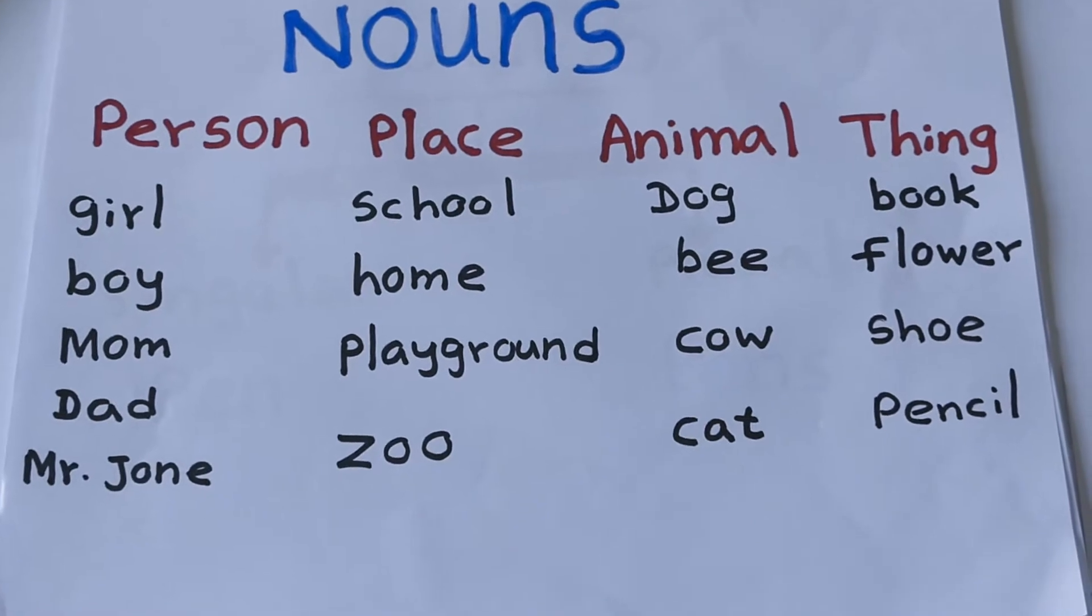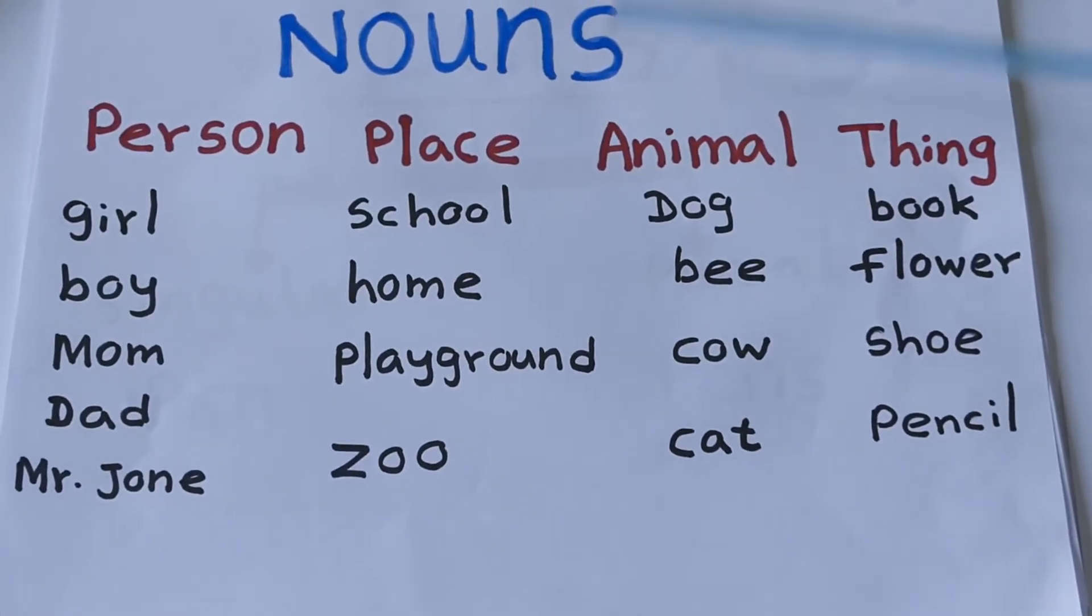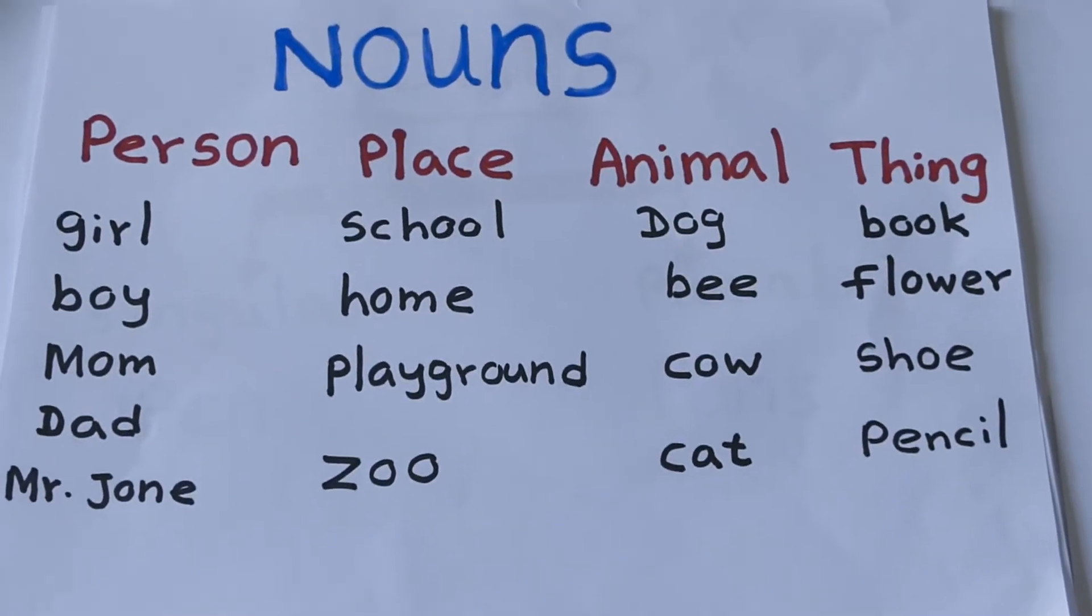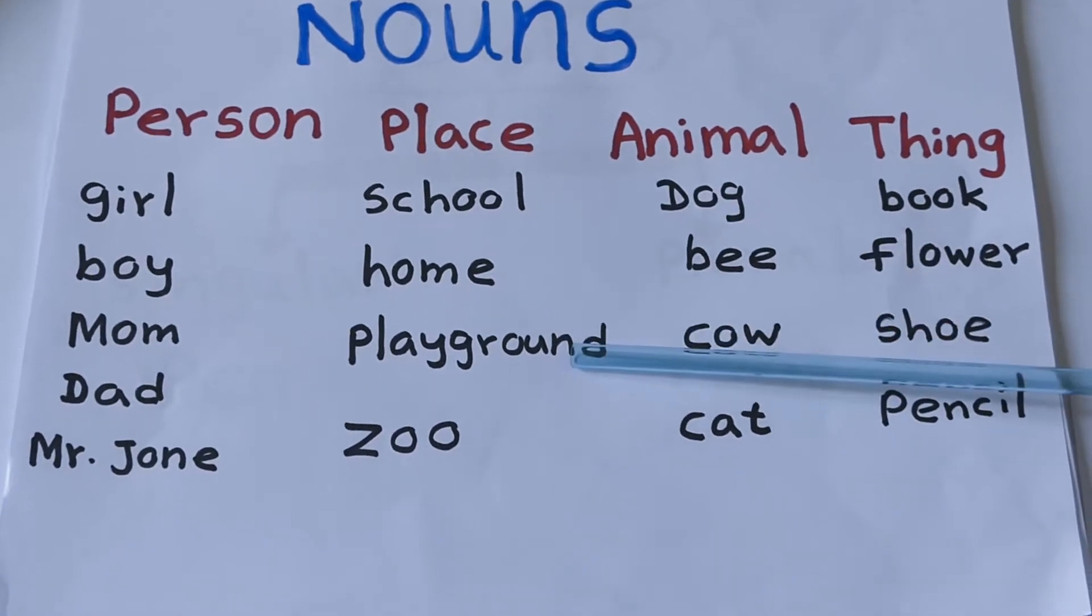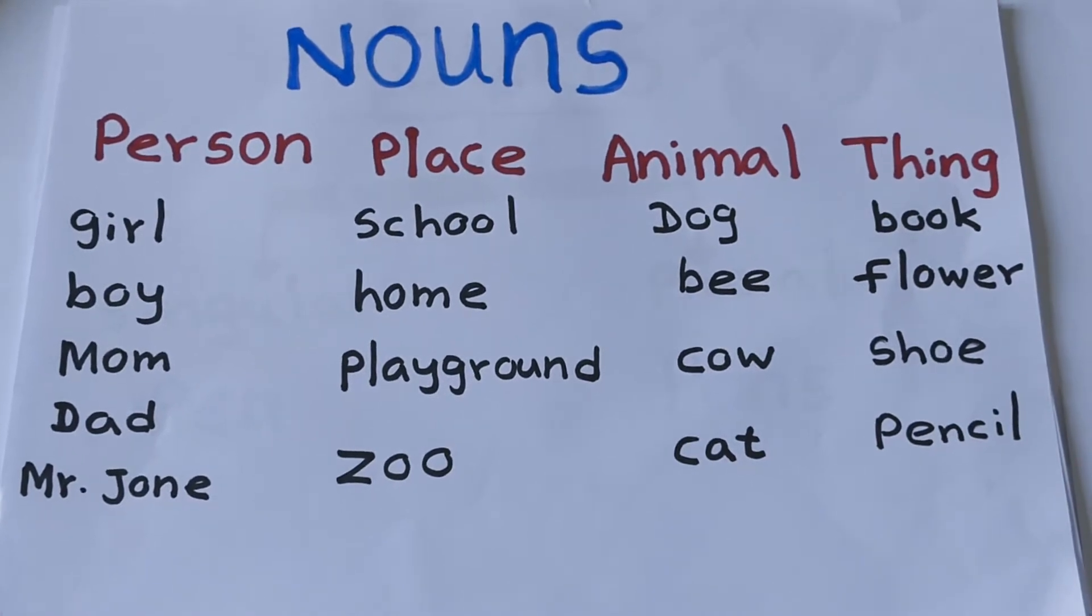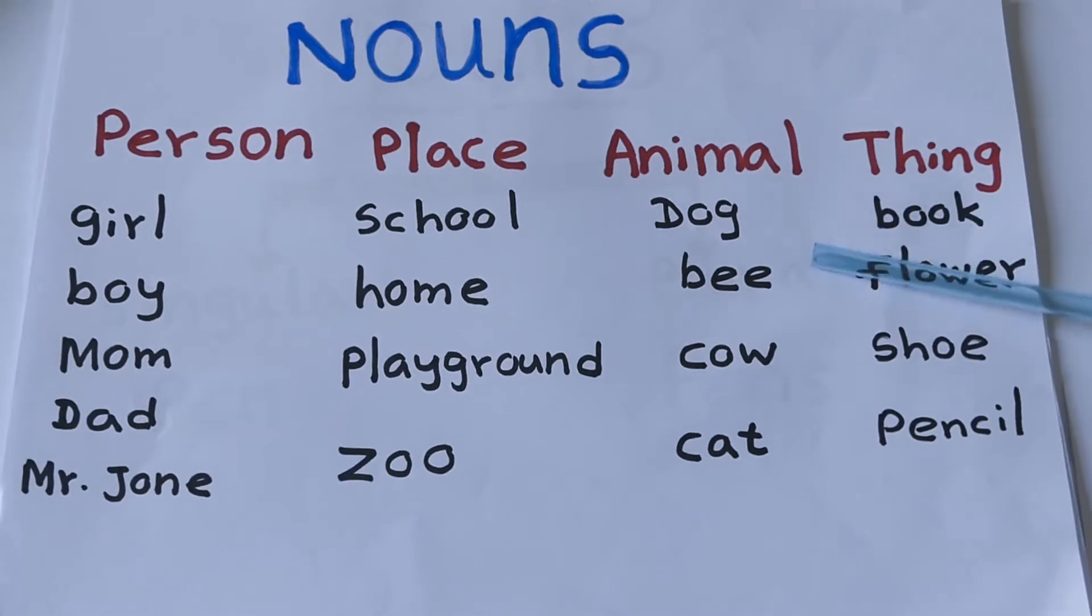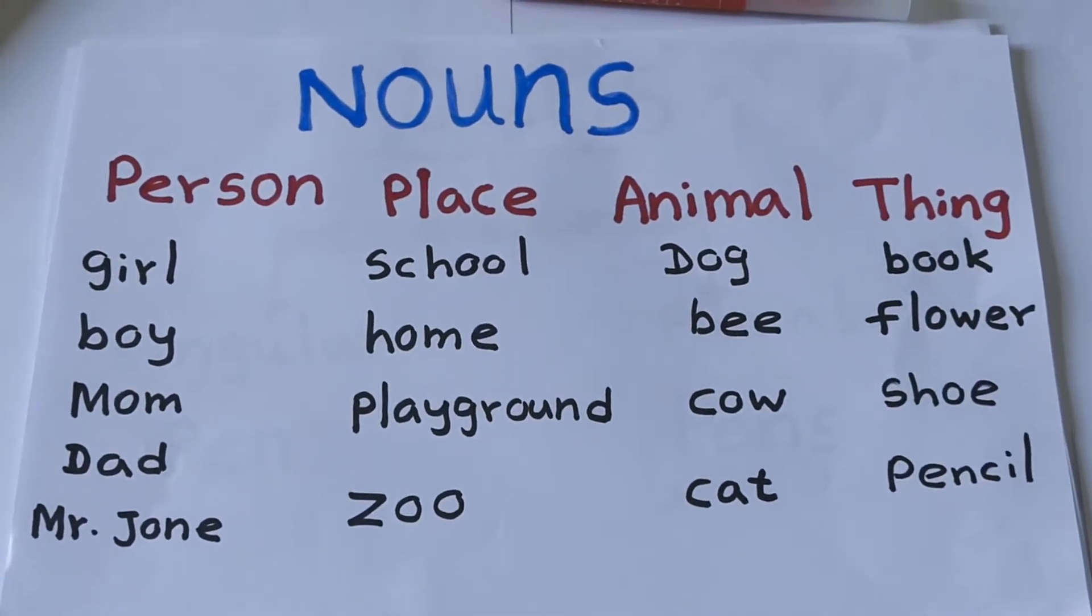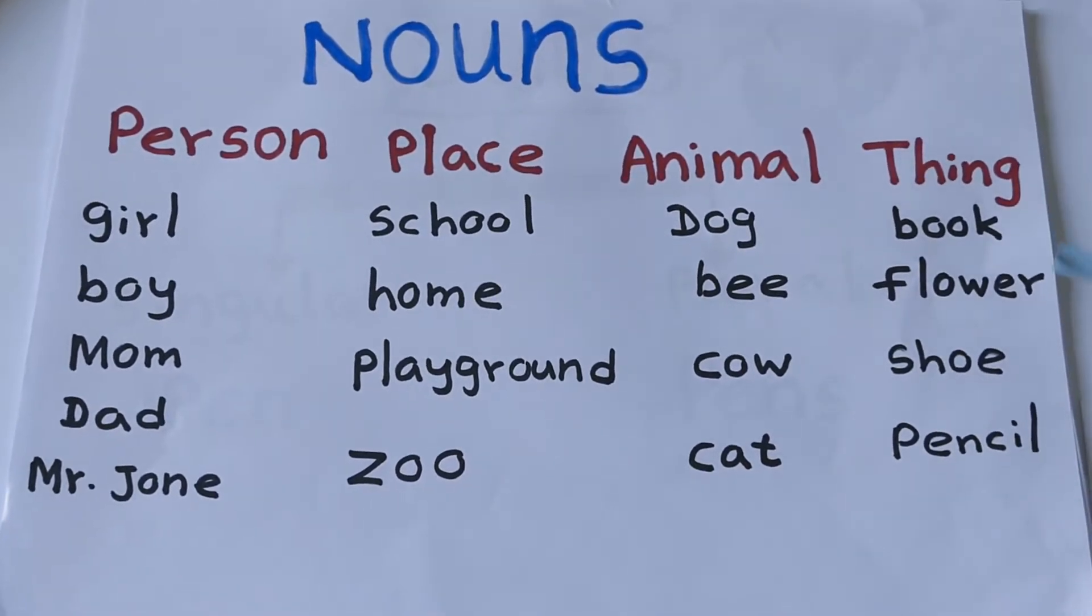Place. What are the examples of places? School, home, playground, and zoo. What are the examples of animals? Dog, bee, cow, cat.